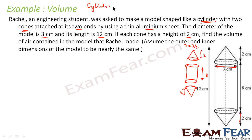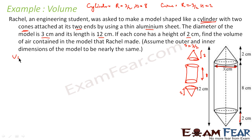For the cylinder, R₁ = 3/2 and H₁ = 8. For the cone, R₂ = 3/2 and H₂ = 2. Now the question is very simple. Volume of figure is equal to volume of cylinder plus 2 times volume of cone, because there are two cones.